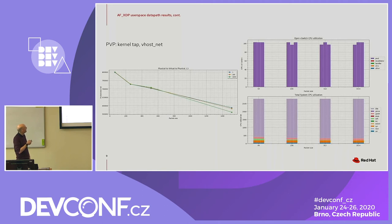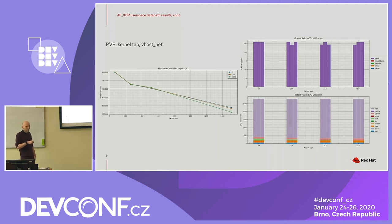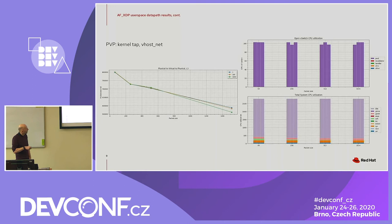For the AF-XDP PVP test, you get about 0.8 million packets per second. The flows are roughly the same. The CPU utilization is higher because you get the PMD thread at about 100%, then 100% for the virtual machine polling the vhost queue, and then 100% for the hardware NIC being polled as well, plus some overhead from QEMU doing interrupt handling.